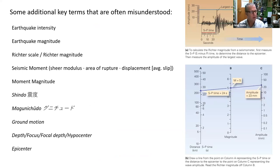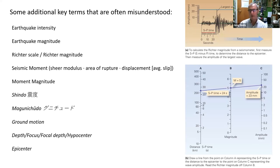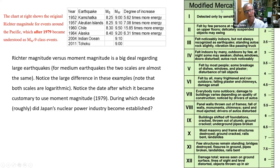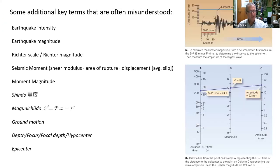Getting back to some terms that are often misunderstood: earthquake intensity. We choose the word intensity very specifically to mean the subjective feeling or experience of the earthquake from a human point of view. From the point of view of lots of individual humans saying: 'I couldn't stand up, the shaking was so severe,' or 'I felt the earthquake just a little bit,' or 'books were falling off my bookshelf.' That's what intensity is — the subjective perception. There are various scales for that, for example the modified Mercalli scale, which for intensity goes from 1 to 12.